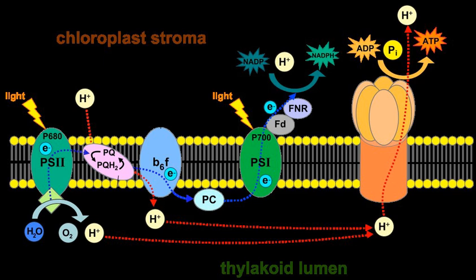In non-cyclic photophosphorylation, cytochrome B6F uses the energy of electrons from PSII to pump protons from the stroma to the lumen. The proton gradient across the thylakoid membrane is used by ATP synthase to form ATP.